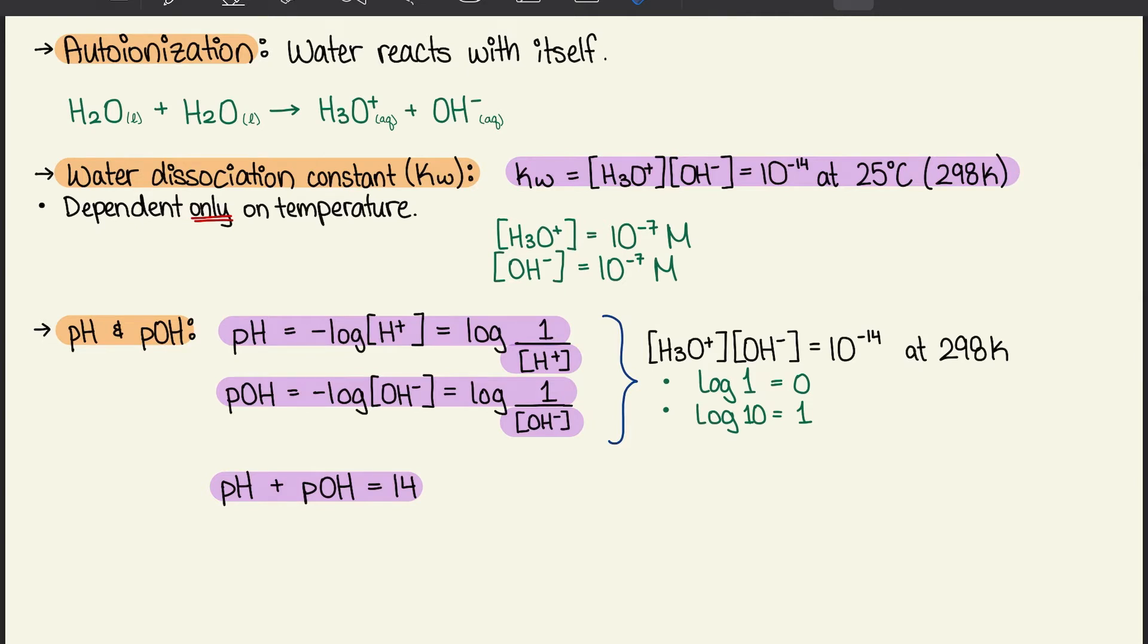When we break down the concentration for each, we take 10 to the negative 14 divided by 2. So each concentration is equal to 10 to the negative 7 moles.